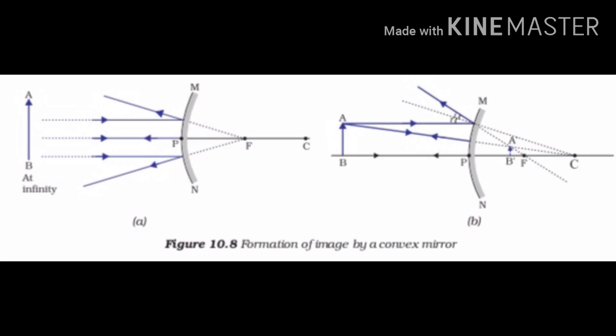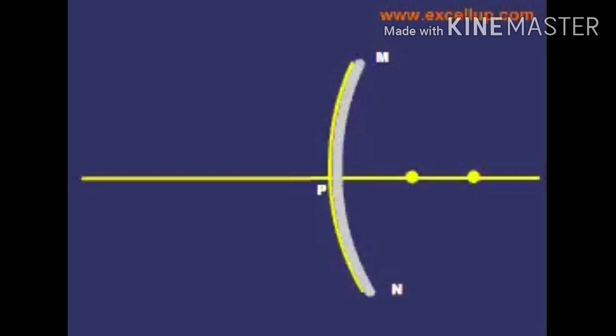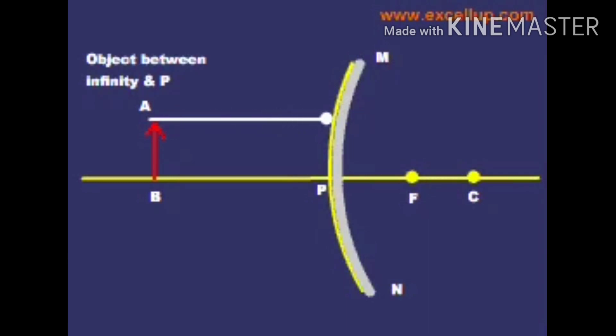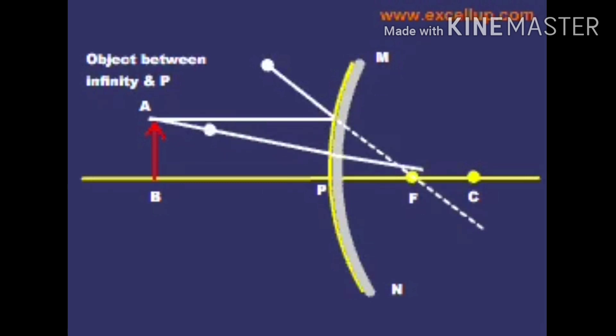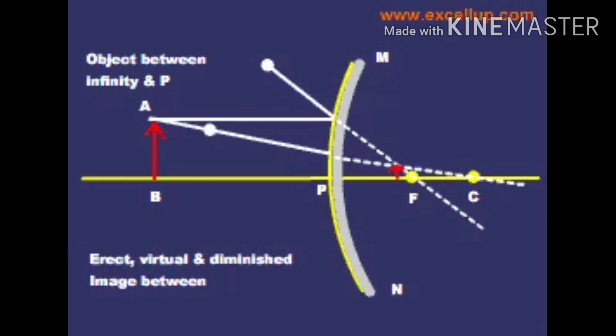We consider two positions of the object for studying the image formed by a convex mirror: first, when the object is at infinity, and second, when the object is at a finite distance from the mirror. At every position, the image formed by a convex mirror is always virtual, upright and diminished.